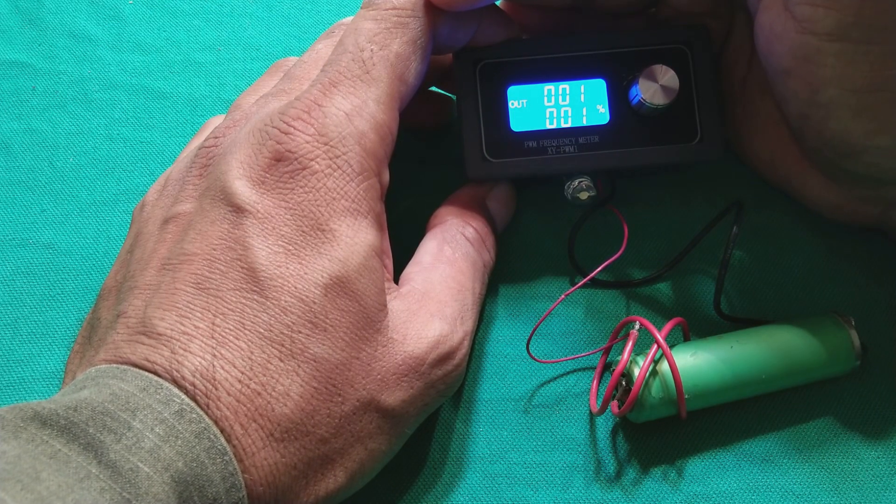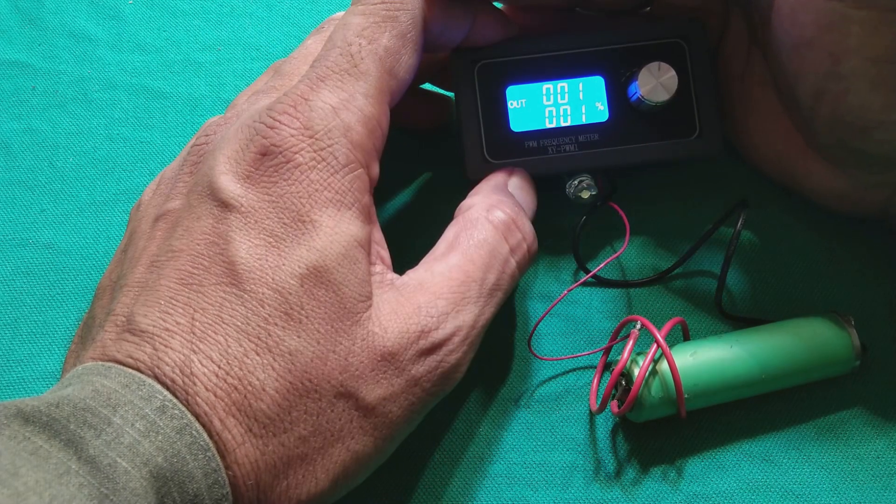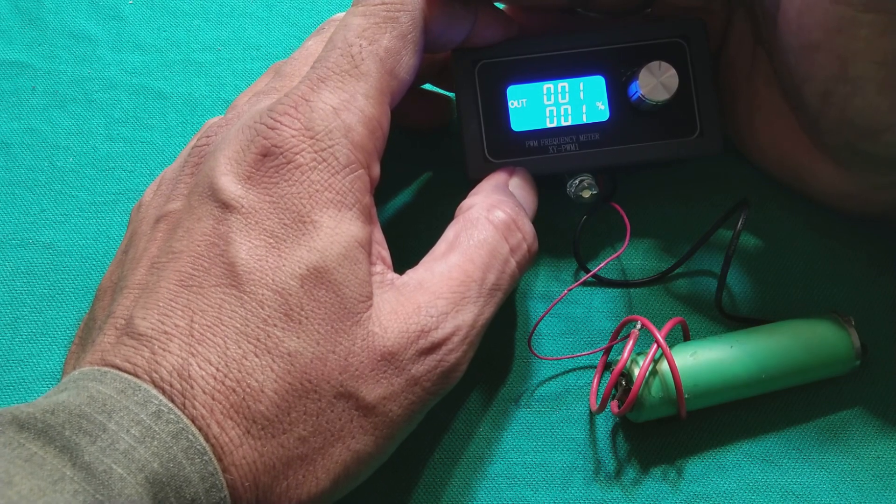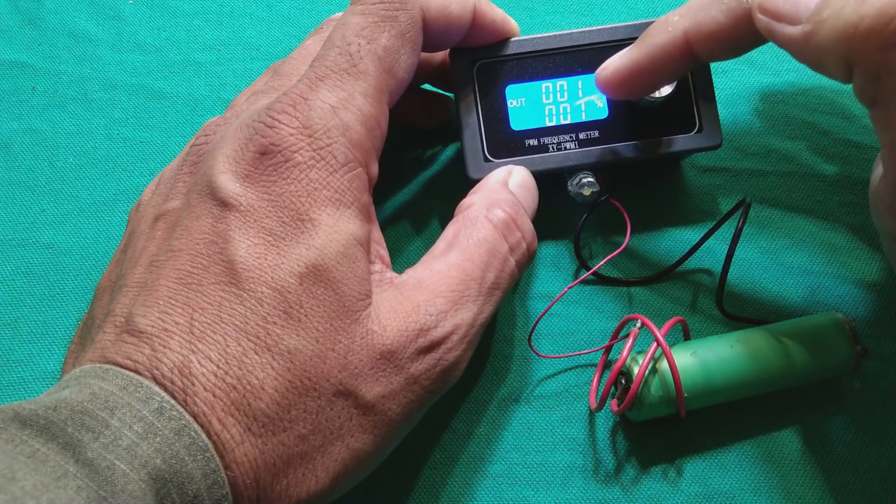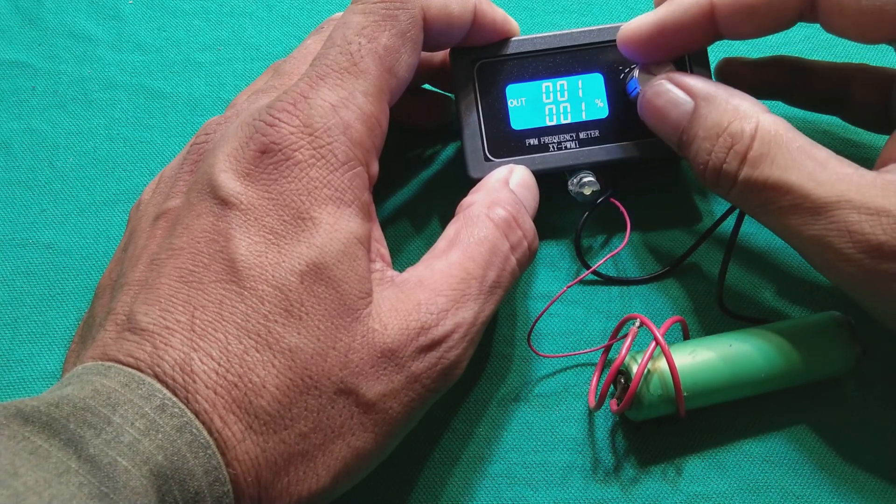This is the duration of the on to off. The pulse width modulation is pulse width, the ratio between on time and off time. Now on time is very small, 1%, and off time is bigger, 99%. So we can change this.